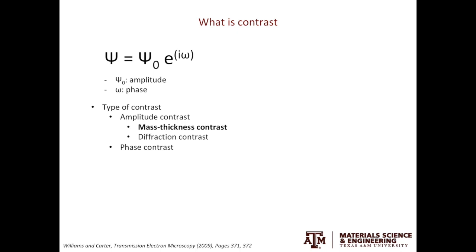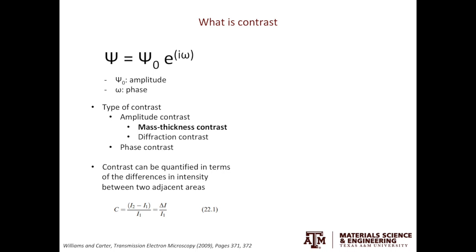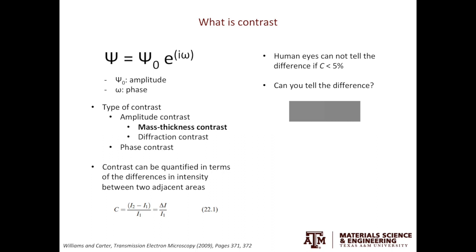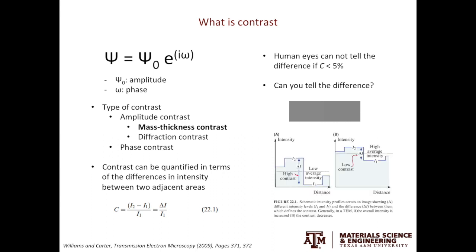You may have heard the word contrast more than 20 times in the past minute. So what is contrast exactly? Contrast can be quantified in terms of the differences in intensity between two adjacent pixels. I2 has higher intensity, I1 has lower intensity. To human eyes, if the contrast is less than 5%, the human eyes cannot see it. This is just a brain teaser — can you see the difference? Can you see the contrast? One note: usually, if the image is high in brightness, the contrast is low. The math behind it is very simple.